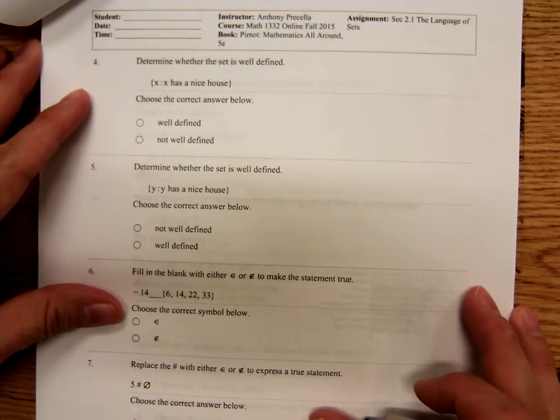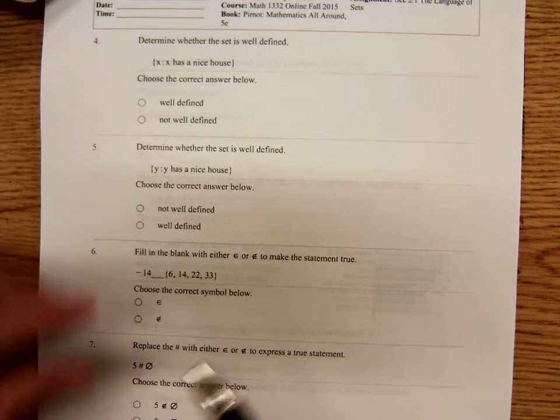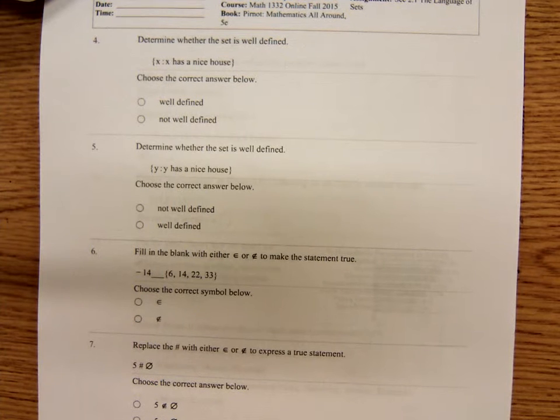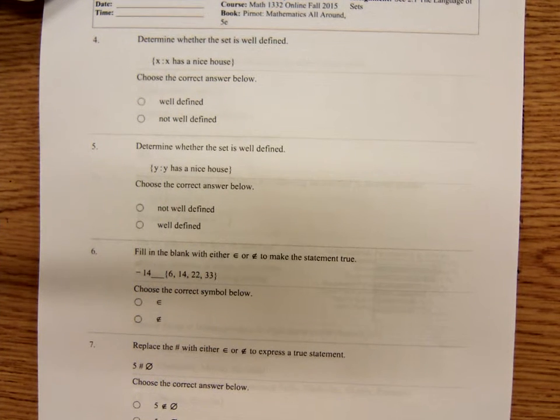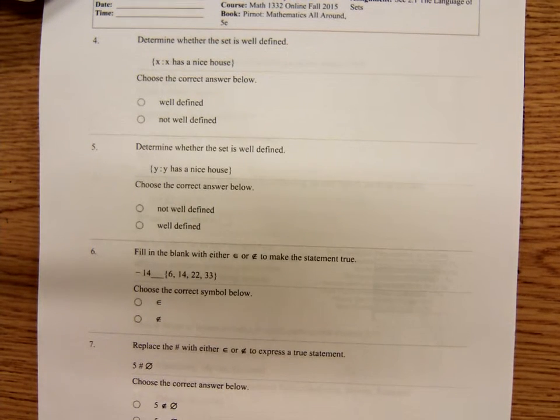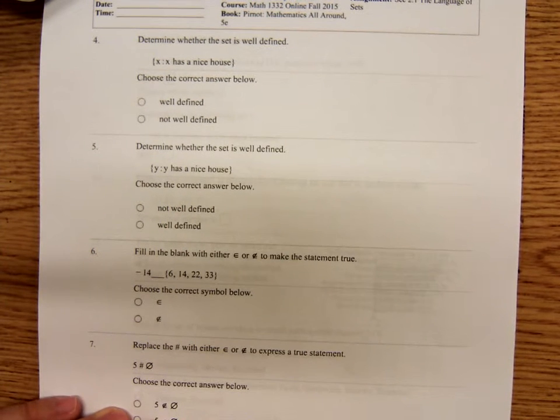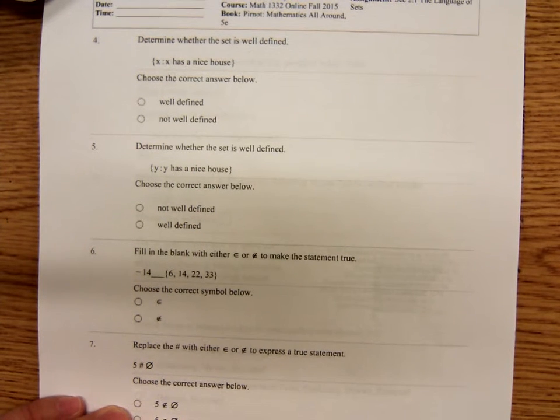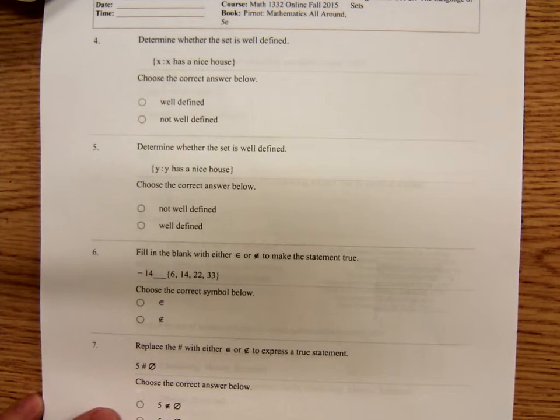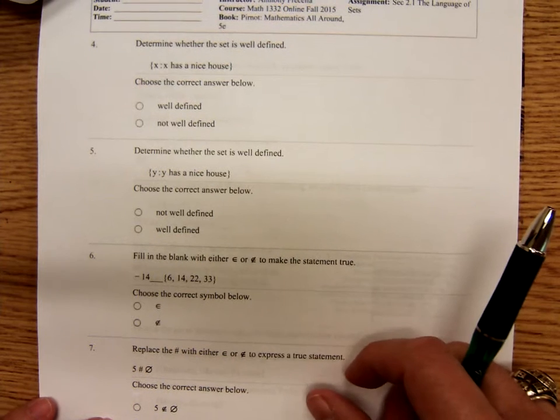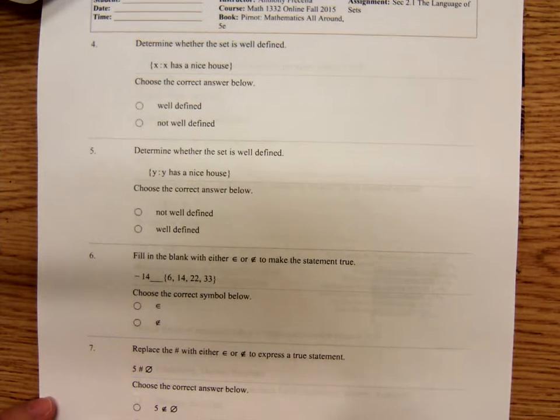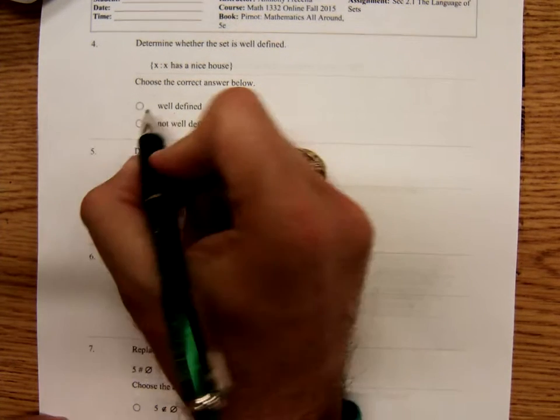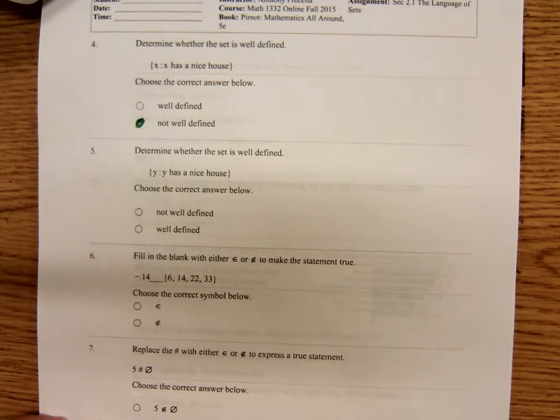What about this one? Number four, determine whether the set is well defined. The set of all X such that X has a nice house. Well, this set isn't really well defined because it depends on your definition of nice house. My definition of a nice house would certainly be different from someone's definition that lives in a third world country. Or some billionaire's house. The Koch brothers' definition of a nice house is probably very different from my definition. It's also very different from some poor person living in a third world country. This one is not well defined because it just sort of depends on your definition of a nice house.